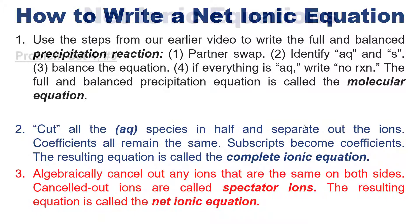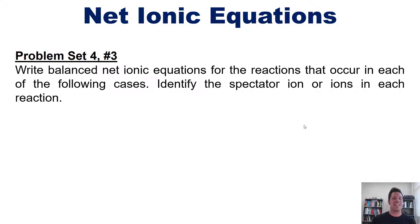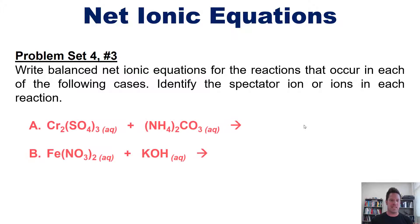Let's take a look then at an actual example from my university student's homework. Please write out net ionic equations for the reactions that occur in each of the following cases, then identify the spectator ion or ions in each reaction. Now, I'm not going to do that in this video, but I'll post a link here to a follow-up video in which you can see me work out one of these examples.